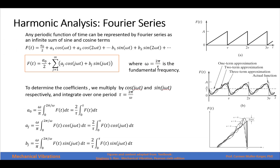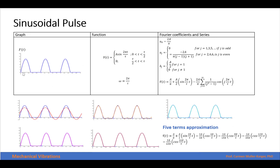We go back to our theory, and we know that any function that is periodic can be represented by a Fourier series as an infinite sum of sine and cosine terms. This is the equation that represents the Fourier series. We have three terms, and the coefficients a₀, aⱼ, and bⱼ can be found using these expressions when we integrate the function we want to represent. This is the sinusoidal pulse that we have in our example — it will be a sinusoidal function for half of the period and will be 0 for the other half of the cycle, and then we start all over again.